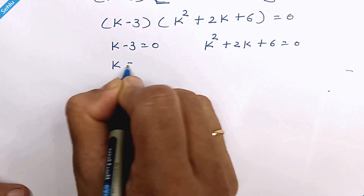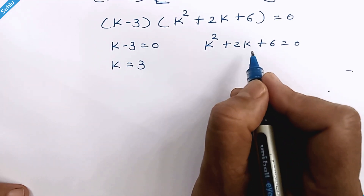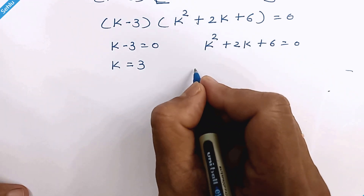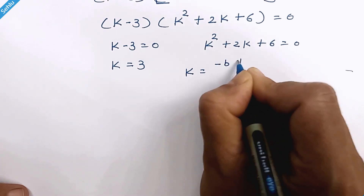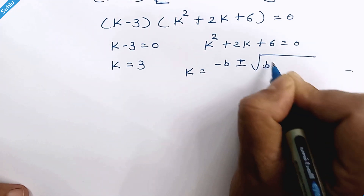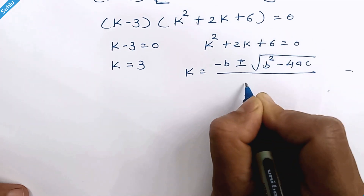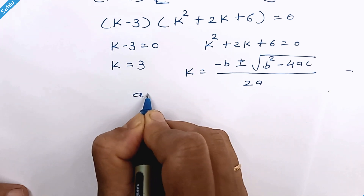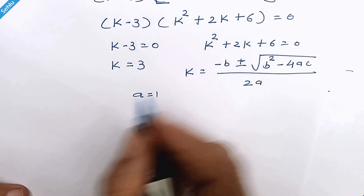From the first factor, k is equal to 3. The second gives a quadratic equation, so let's apply the standard quadratic formula: k equals minus b plus or minus square root of b square minus 4ac over 2a. Here a is equal to 1, b is equal to 2, and c is equal to 6.